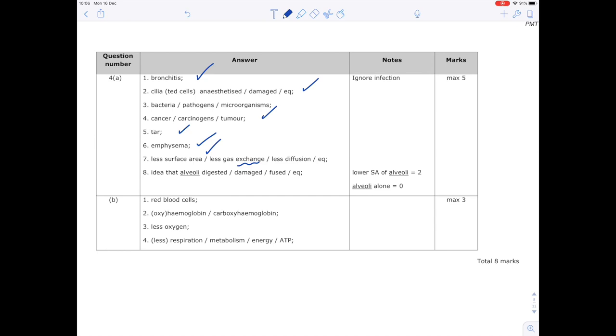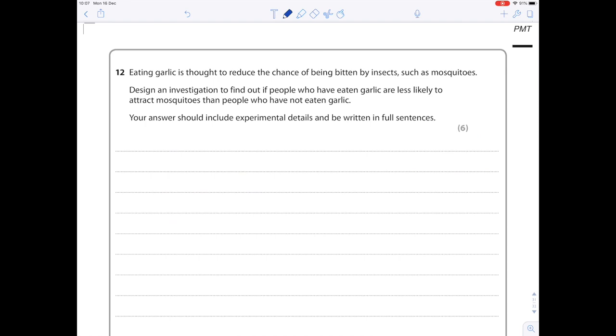I definitely said bronchitis, I mentioned cilia, I mentioned cancer, I said the word tar, I said the word emphysema, I said smaller surface area for gas exchange - I actually said both of those things - and I said that the alveoli were damaged. That's one, two, three, four, five, six, seven. Yeah, so that is five whole marks in the bag.